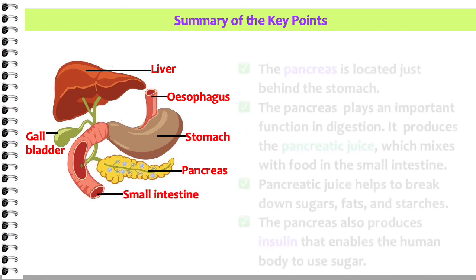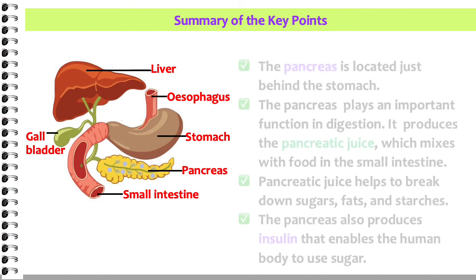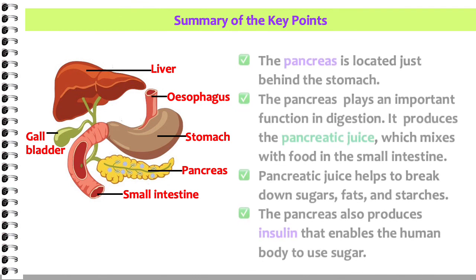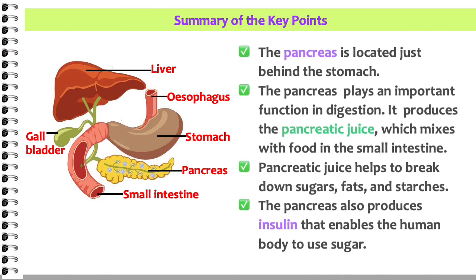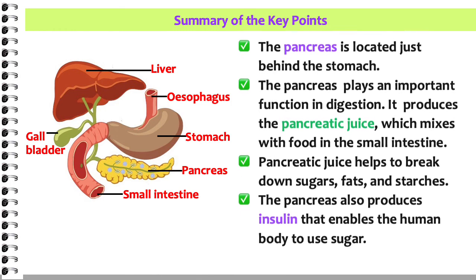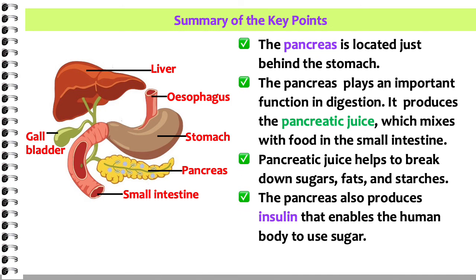The pancreas is located just behind the stomach and plays an important function in digestion. It produces the pancreatic juice, which mixes with food in the small intestine. Pancreatic juice helps to break down sugars, fats, and starches. The pancreas also produces insulin, which enables the human body to use sugar.